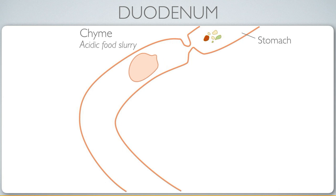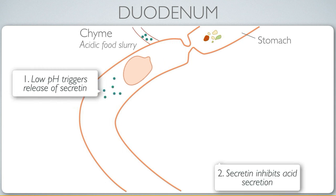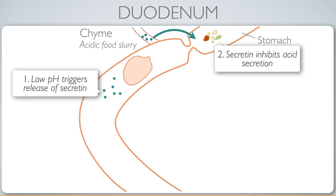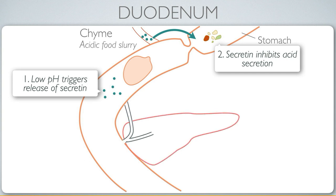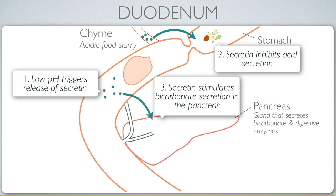Secretin is released into the bloodstream and into the gut lumen, where it can be detected by other digestive cells. Secretin has several responses: first, it inhibits acid secretion within the stomach — the stomach produces hydrochloric acid only at high concentrations when needed, and secretin reduces those secretions. To neutralize the acidic chyme, secretin also acts on the pancreas, which releases bicarbonate.